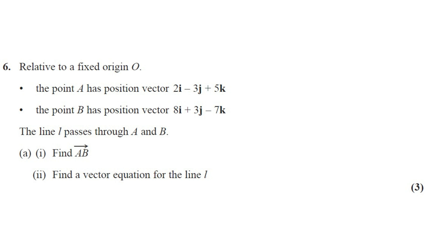Question number 6. Relative to a fixed origin O, the point A has position vector 2i minus 3j plus 5k. The point B has position vector 8i plus 3j minus 7k. The line L passes through A and B. We need to find the AB vector and a vector equation for the line L. This question has 3 marks.